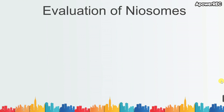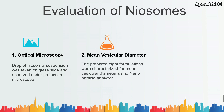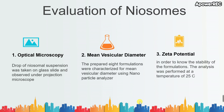Evaluation of the formulations began with simple optical microscopy, by applying a drop of the neosomal suspension on a glass slide and observing under a projection microscope. The second parameter evaluated was mean vesicular diameter using a nano analyzer — a drop of the neosomal sample was mixed with distilled water, sonicated for one hour, and then the diameter was determined.